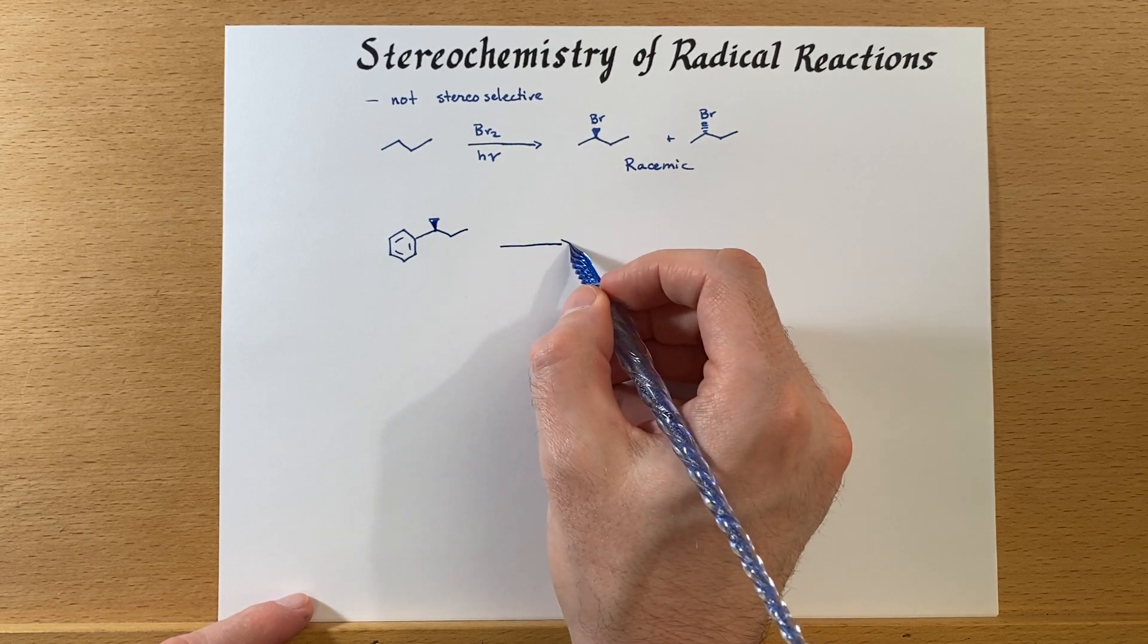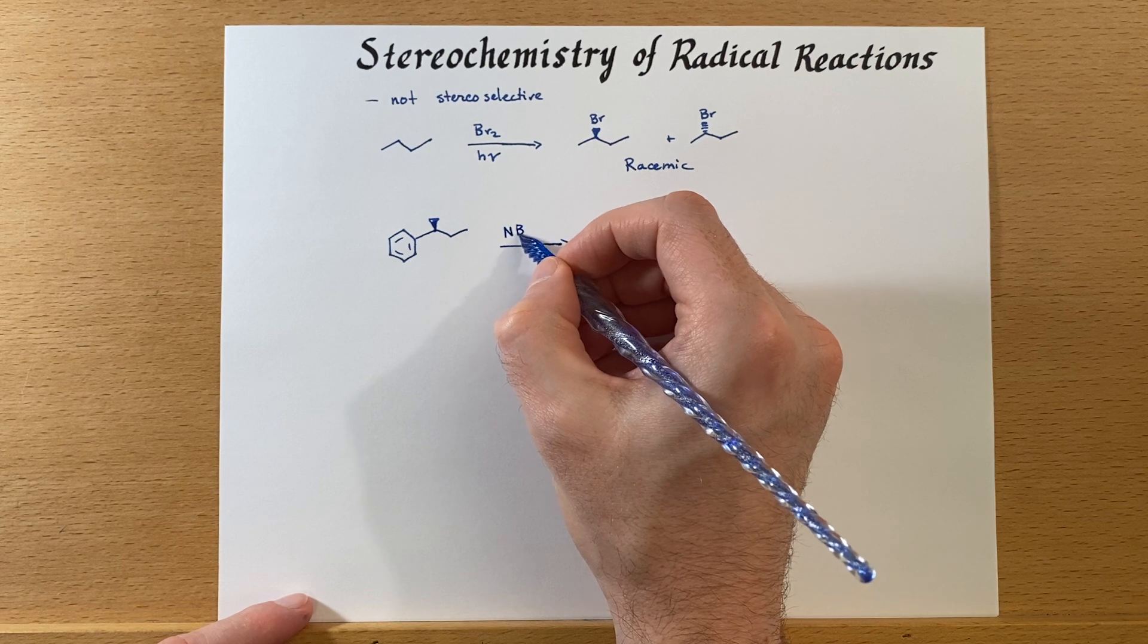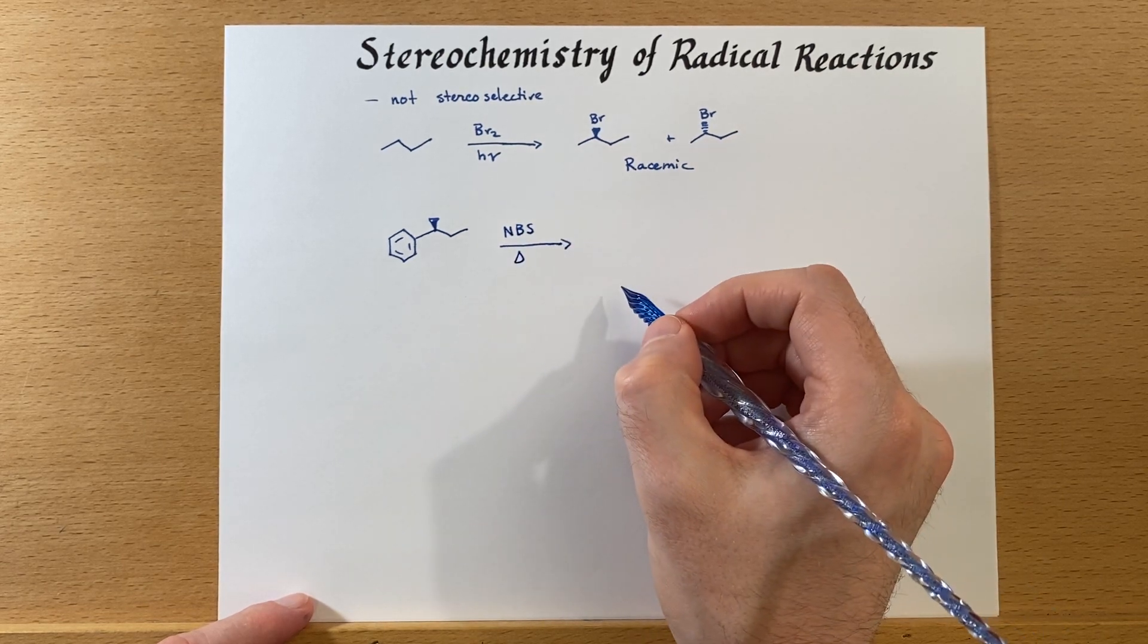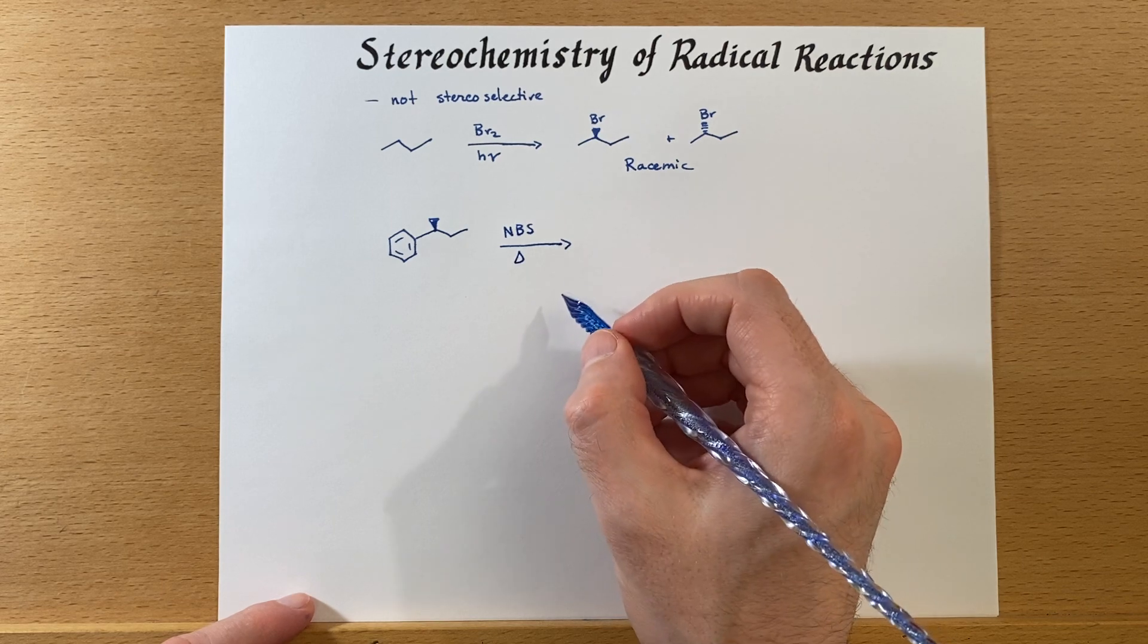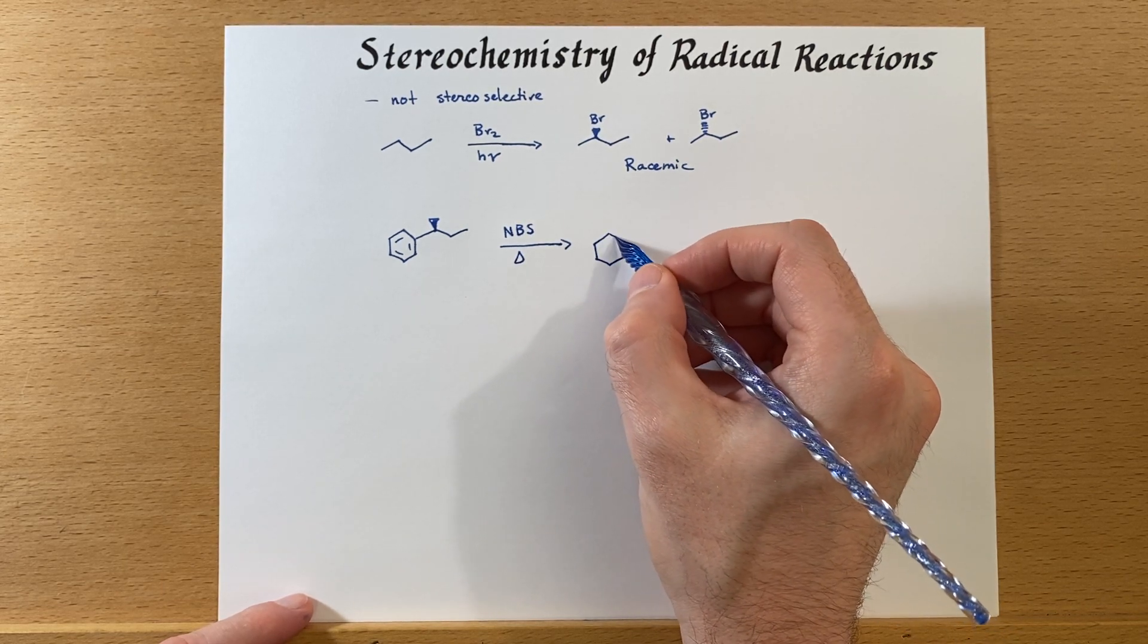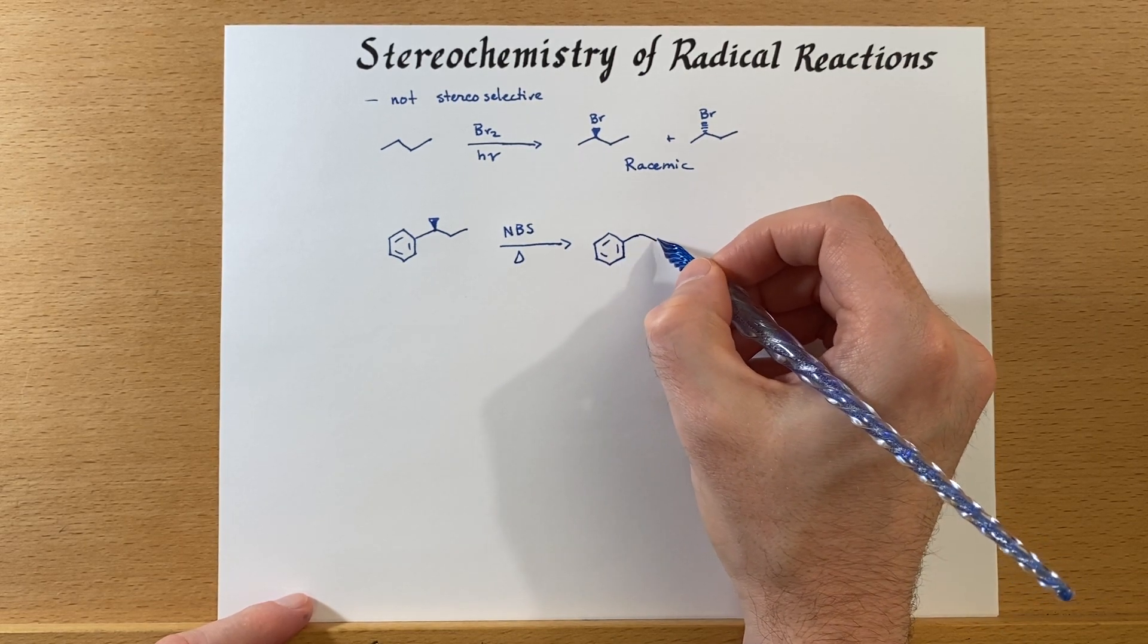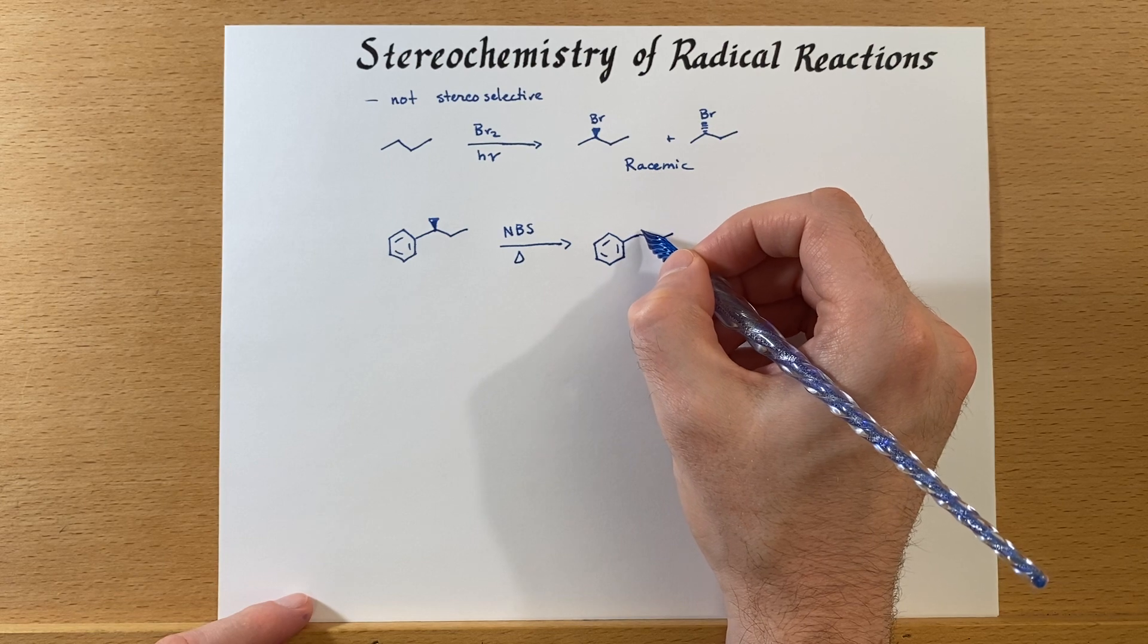We're going to add our new favorite radical initiator NBS and add some heat so that this thing falls apart. Unfortunately for us, we will get a mixture of the isomers.